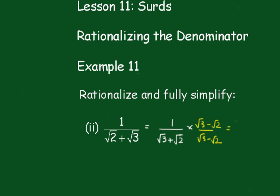Okay, and that becomes root 3 minus root 2 over root 3 by root 3 is 3, and root 2 by root 2 is 2. And that becomes root 3 minus root 2.